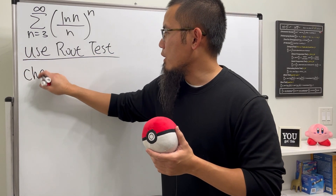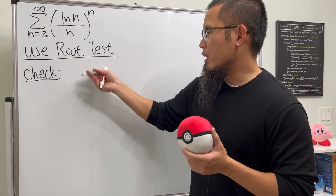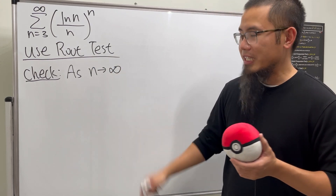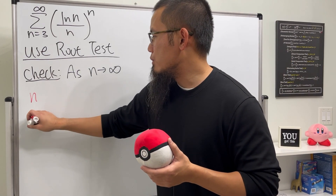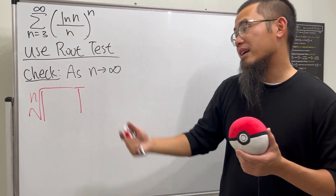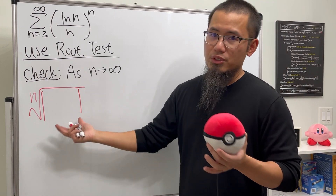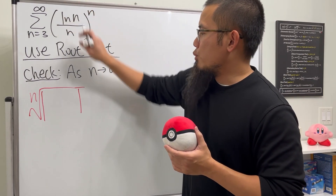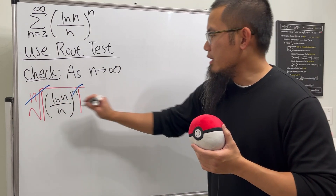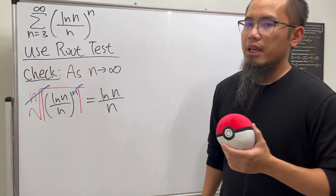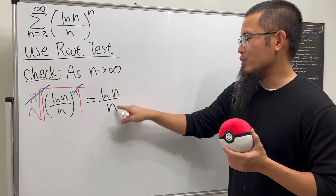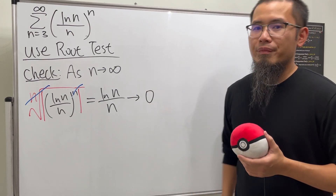For the root test, we take the limit as n goes to infinity of the nth root — with an absolute value — of the expression. The nth root and nth power cancel, leaving ln(n)/n. As n goes to infinity, ln(n) is the smallest kind of infinity compared to n, so this limit goes to zero.